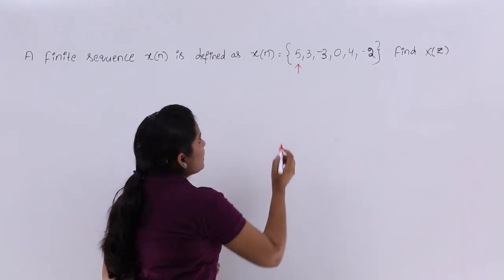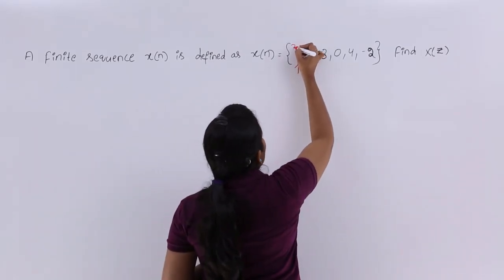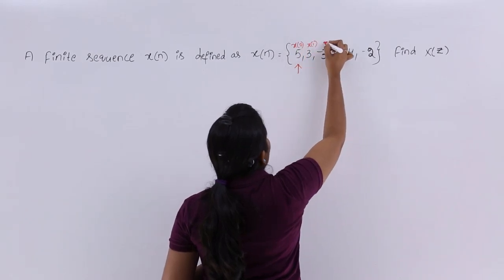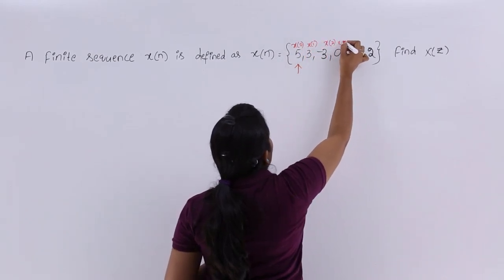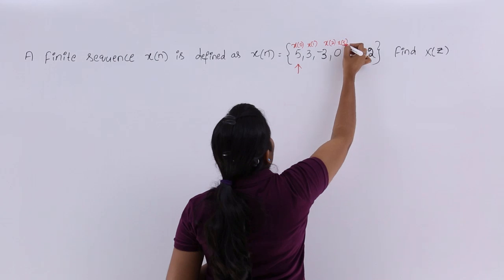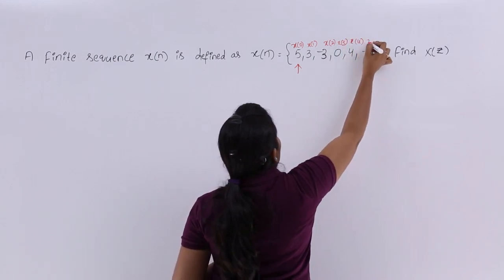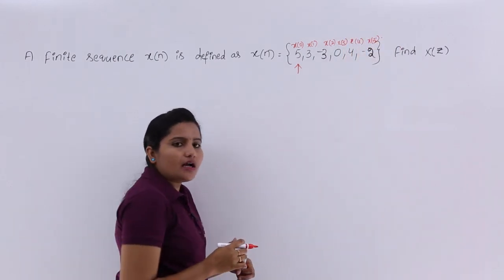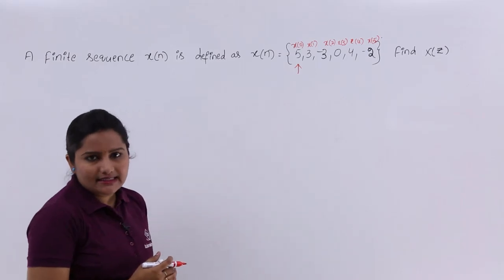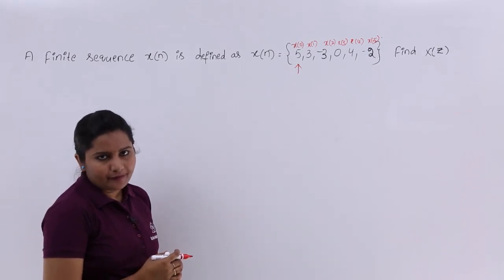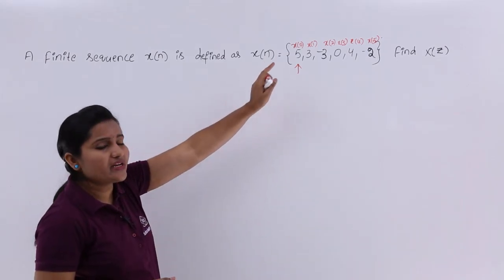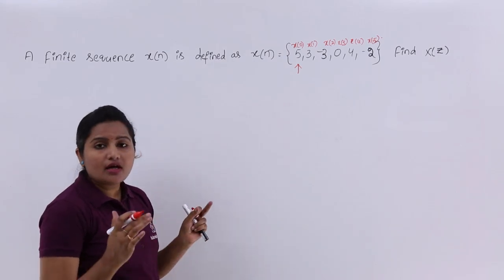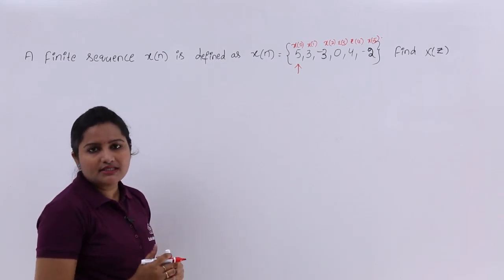If an arrow mark is not given, the starting point is x of 0, and you treat the sequence as fully right-sided. So here, the samples are x of 0, x of 1, x of 2, x of 3, x of 4, and x of 5. The signal exists from n equal to 0 to n equal to 5.